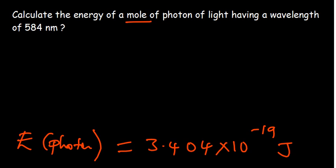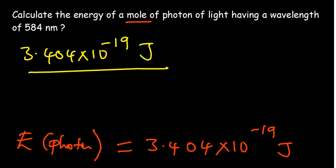I'll start like this. We have 3.404 by 10 to the power negative 19, that is joules per every photon. Now I want to find the answer of the energy of a mole of photons. We understand that the formula, Avogadro's constant, is 6.022 by 10 to the power 23.